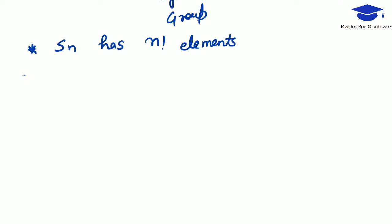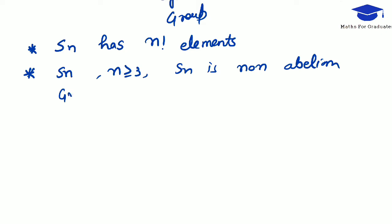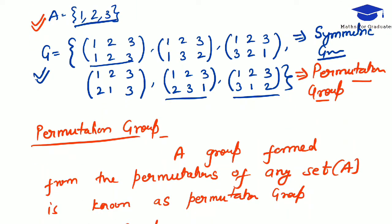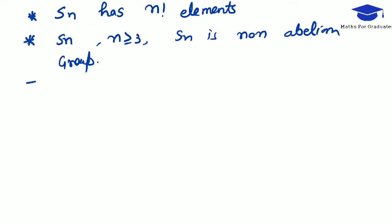Now let us know some facts. Symmetric group Sn has n factorial elements. If n is greater than or equal to 3, then Sn is a non-abelian group. For this particular example, A has 3 elements and this group G contains all permutations, so this group G is nothing but S3. Symmetric group S3 is isomorphic to the dihedral group D3.